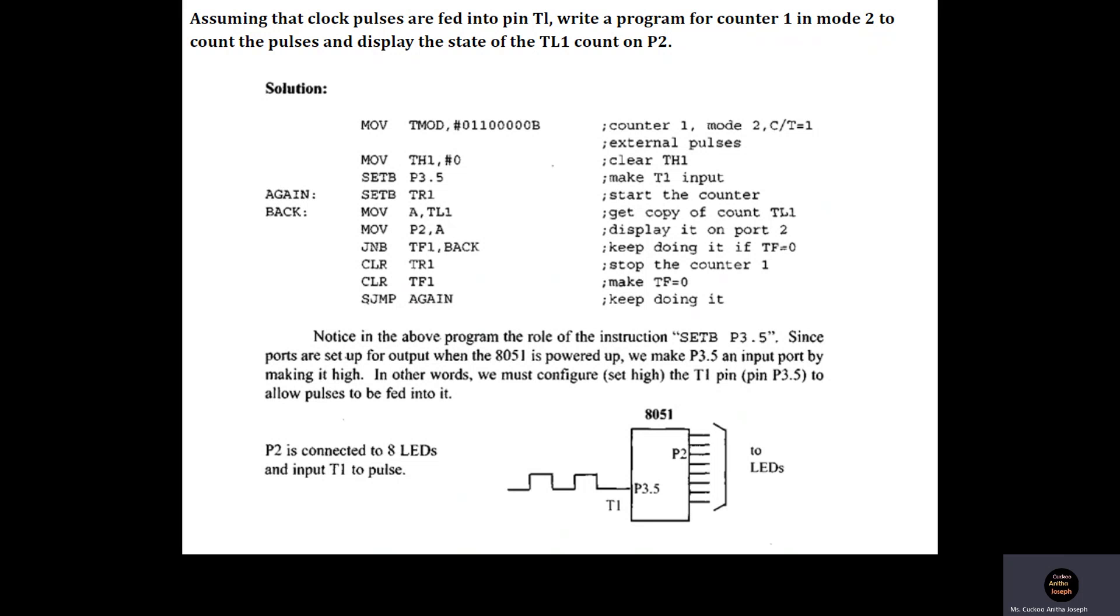So the value that should be loaded into TMOD register will be such that the lower nibble will be 0 because timer 0 is not used, and we are using timer 1 so in counter operation it should be used as a counter.